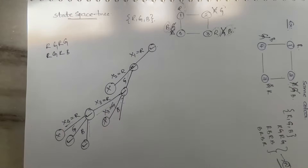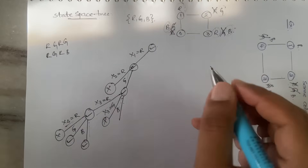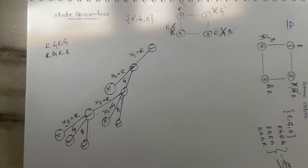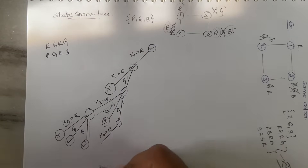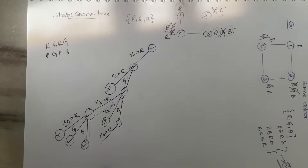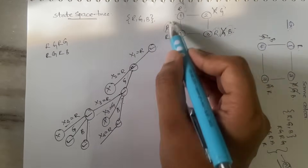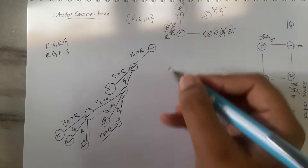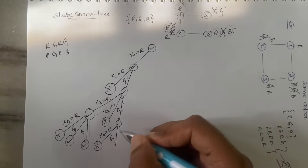x3 = blue is accepted. Now checking x4 under this path: x4 = red is not accepted because x1 already has red and is adjacent. x4 = green — let's check.